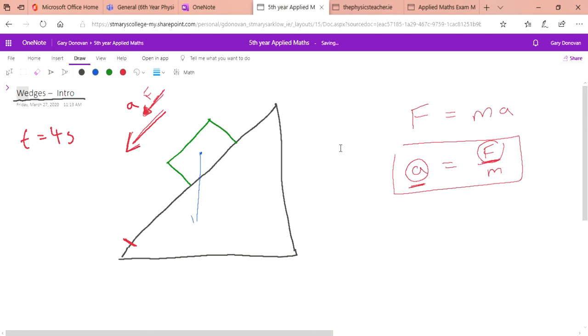The force pulling it straight down will be m times g, its mass times gravity. Let's assume this angle here is 30 degrees. What we need to do in order to find this acceleration is get the force that's in the same direction as the acceleration.